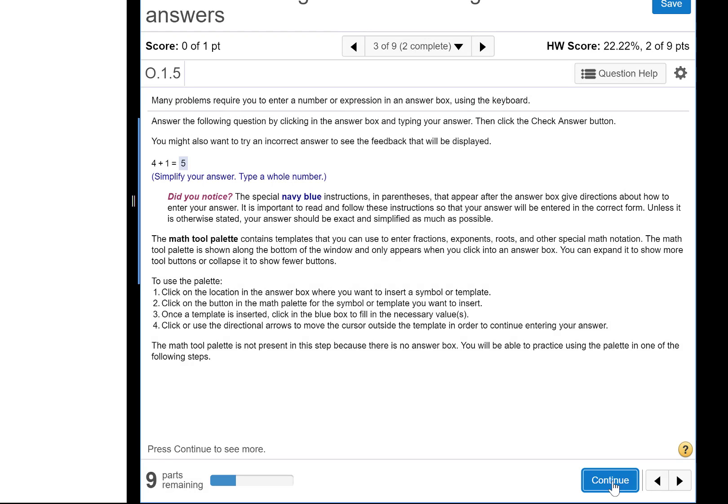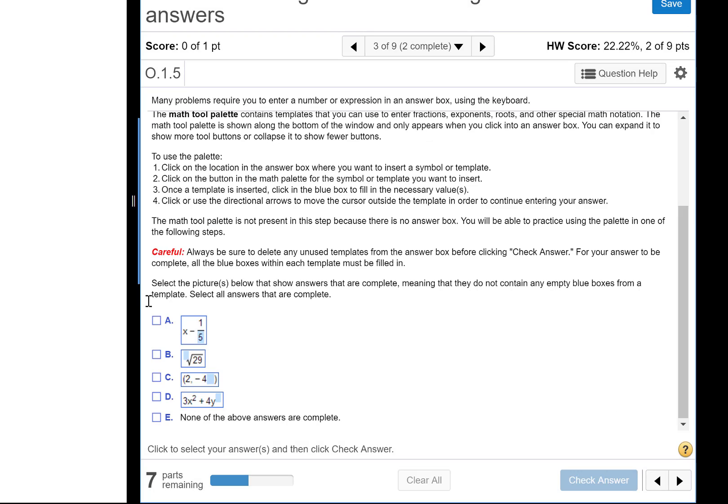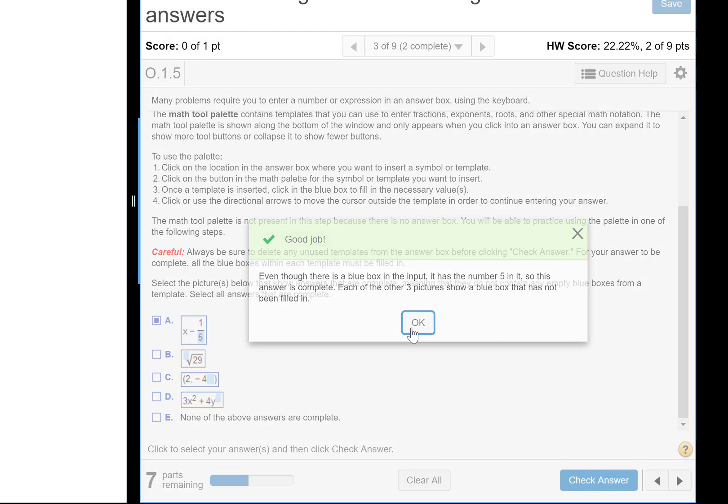Now we're going to play with the math tool palette. It says to delete any unused templates. So let's see what that looks like here. If you'll notice this blue empty box, that blue one and that blue one, that's what they mean. So they shouldn't be there. You want no blue empty boxes. Notice here, this blue box has a five within it. That five is meant to be there in the bottom. So which one of these is correct? This top one, A is correct. Check answer.